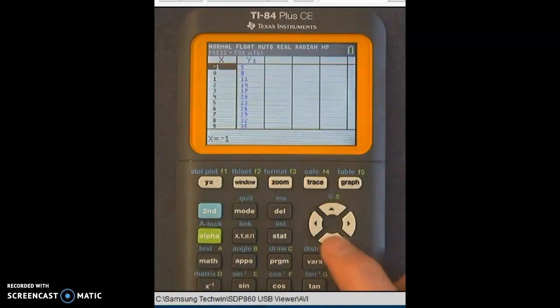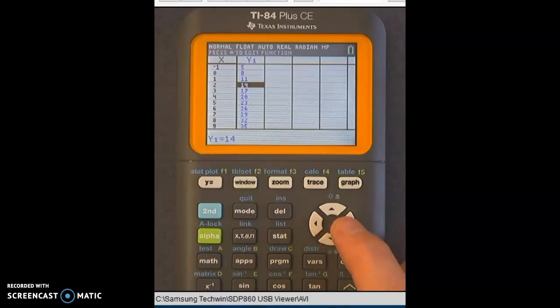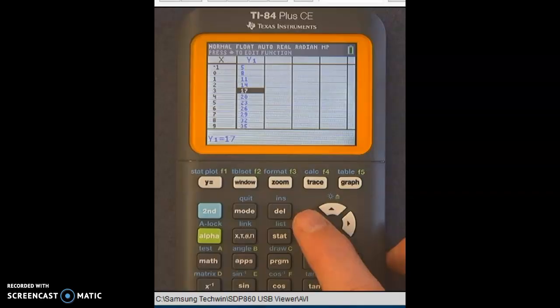So second table, and then I can scroll up and down. So when X is 2, Y is 14. When X is 3, Y is 17.